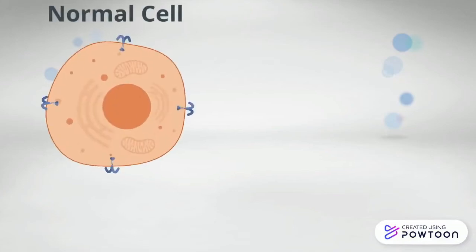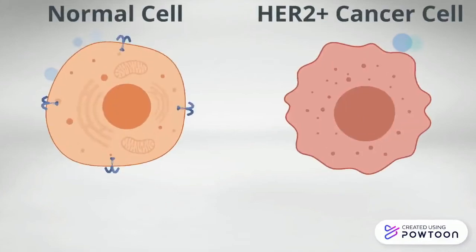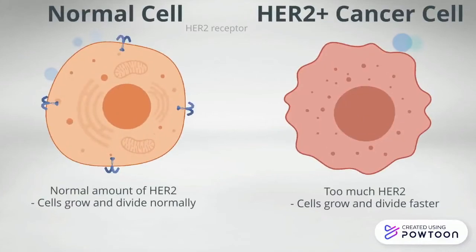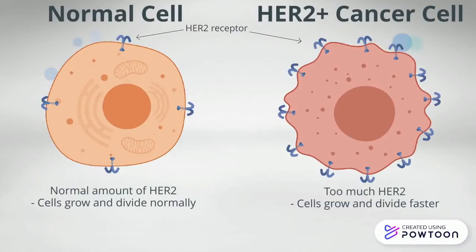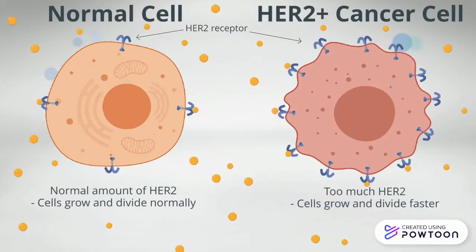CRISPR-Cas9 technology can be used to treat HER2-positive breast cancer, which is categorized as overamplification of human epidermal growth factor receptor 2 gene.